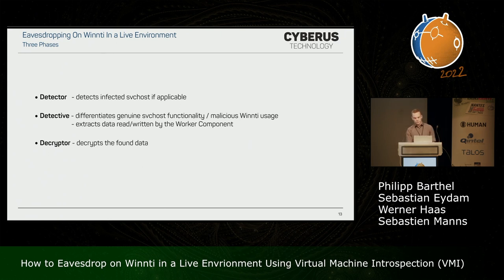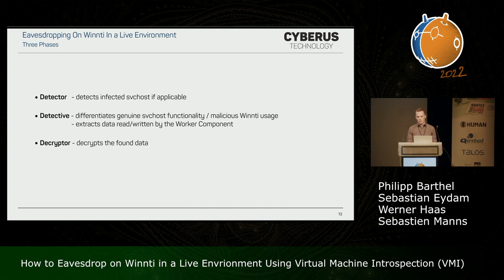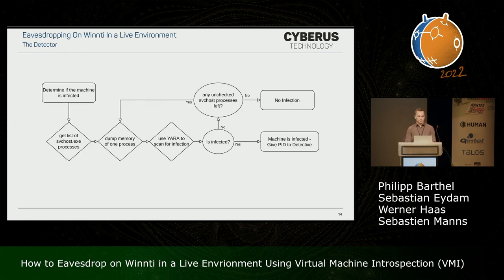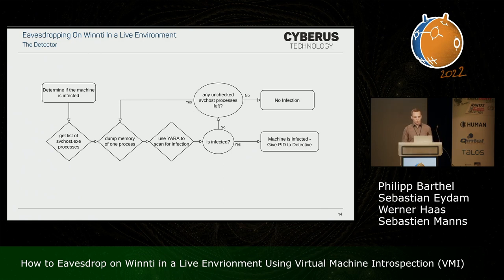The WinTi Detective consists of three phases: a detector, a differentiator, and a decryptor. The detector looks for the infected svchost process: it gets a list of all svchost process IDs running on the machine, goes through them one by one, pauses each one, dumps its memory via serial to the analyst PC, and applies a Yara rule to determine whether that process is infected.